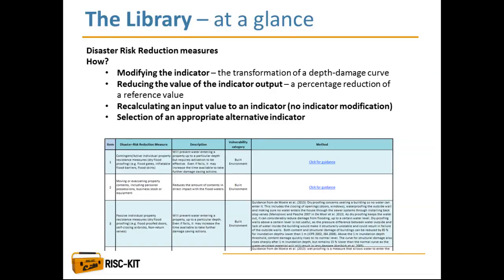Finally, the library proposes a list of disaster risk reduction measures and methodologies. Four options are proposed: modifying an existing indicator, such as transforming a depth-damage curve to represent the presence of resistance or resilience measures; reducing the value of the indicator output, such as using a percentage reduction for a reference value; recalculating an input value; or selecting another alternative indicator which is more appropriate and representative of the DRR measure.